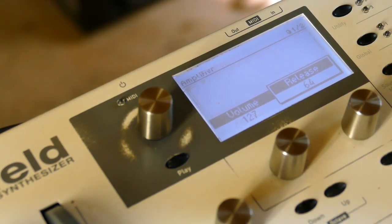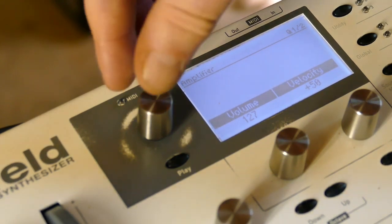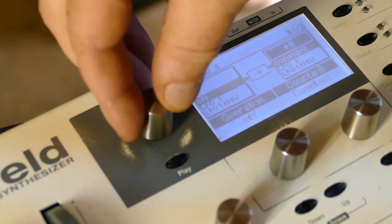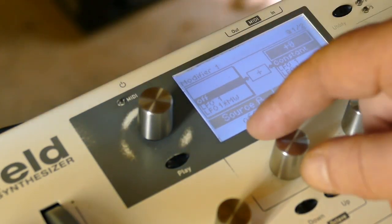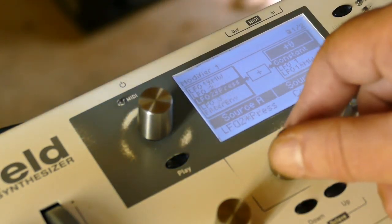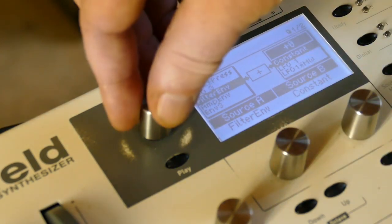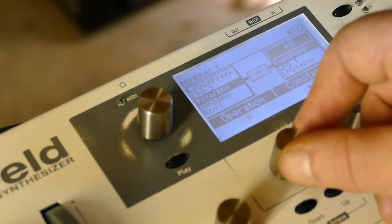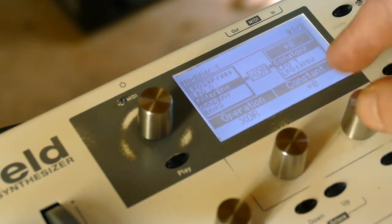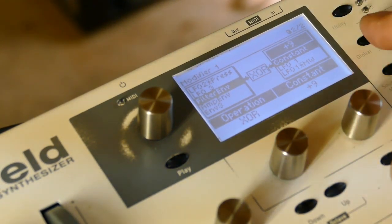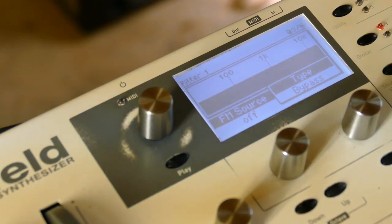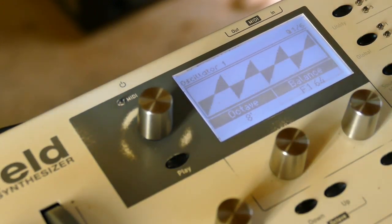I'm going to write a modifier for the filter. On modifier one, I'm going to say filter envelope X or plus 9. For now I'm going to disable the filter, but it will come back into play.